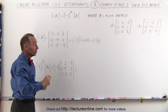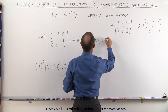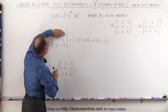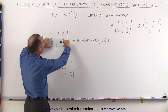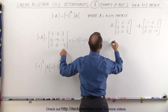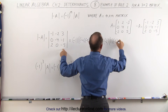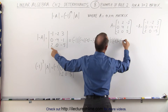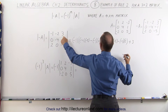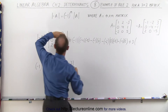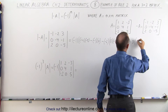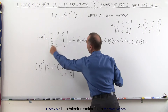Now we take the negative of the second element, so that becomes minus negative 2, multiplied times — we get rid of that row and that column — giving us those four elements. We multiply the diagonals: 0 times negative 5, minus the product of the other diagonals, which is negative 1 times 2. Finally, we get plus the third element times — getting rid of that row and column — we multiply 0 times 0 and subtract negative 4 times 2.